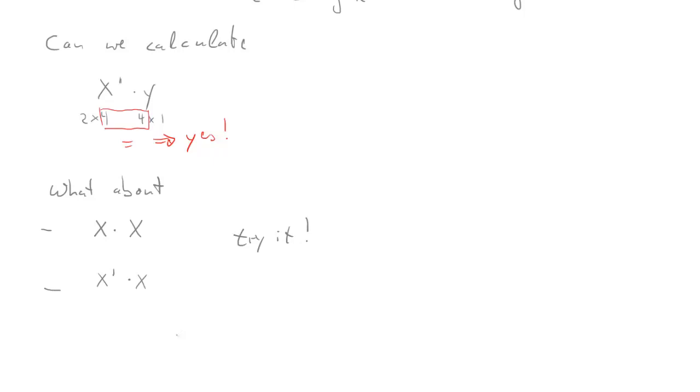What about two further cases? What about X times X? Can we calculate that? And what about X prime times X? Rush to the pause button, press it and think about it. So here come the solutions. X is 4 by 2, X is 4 by 2. So the inner dimensions do not agree. And therefore, this is not possible. We can't calculate X times X if X are 4 by 2 matrices.